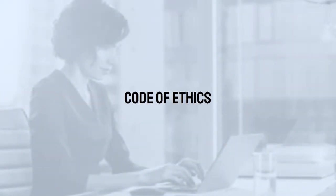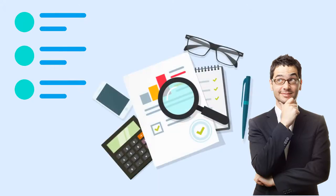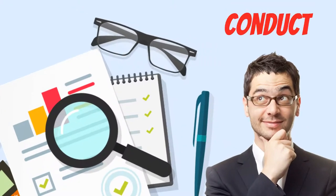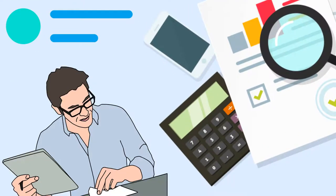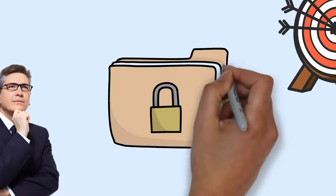Code of ethics. The code of ethics states the principles and expectations governing the behavior of individuals and organizations in the conduct of internal auditing. It describes the minimum requirements for conduct and behavioral expectations rather than specific activities. Principles in the code of ethics: 1. Integrity, 2. Objectivity, 3. Confidentiality, 4. Competency.